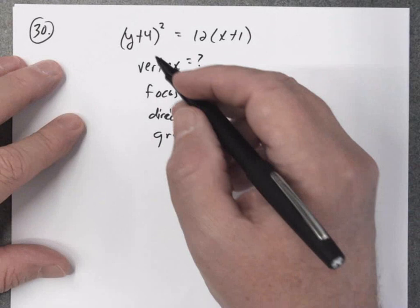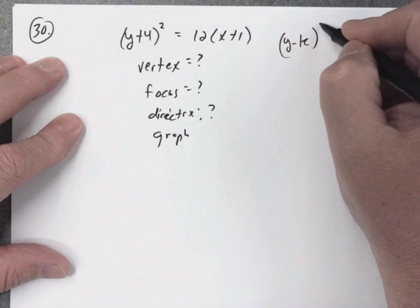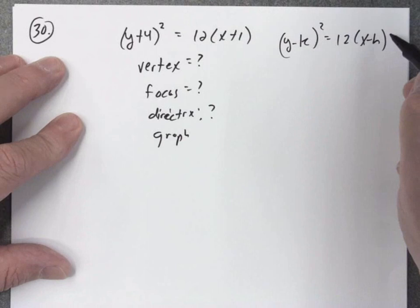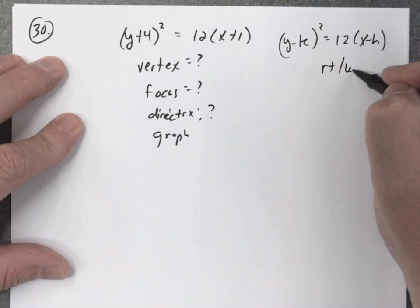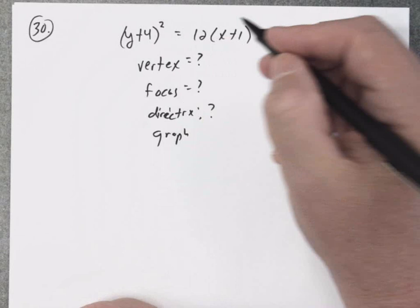So this is pretty straightforward. We're just going to compare this with the standard equation. So the standard equation would be (y - k)² = 4p(x - h).